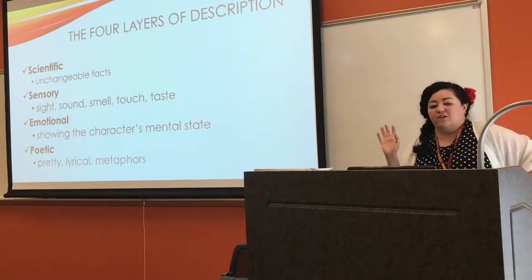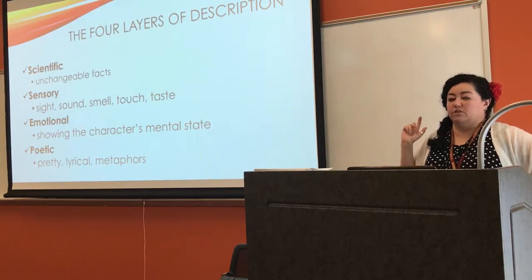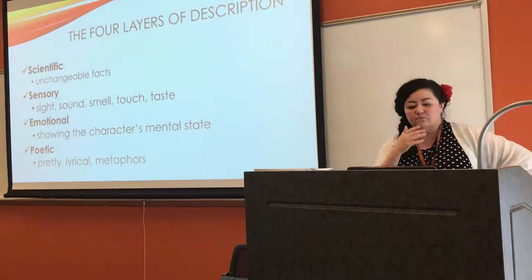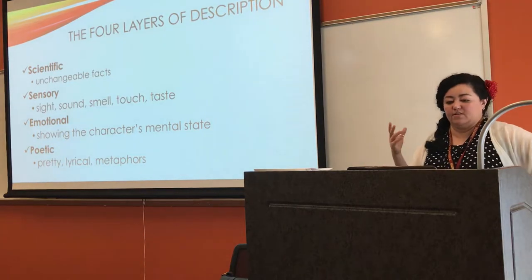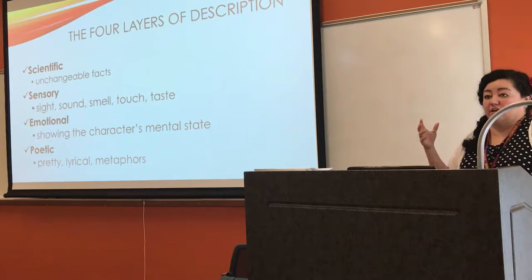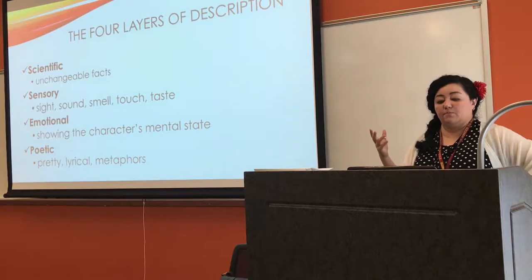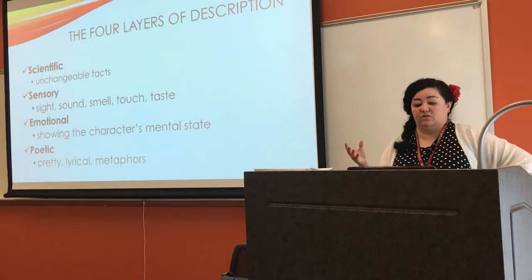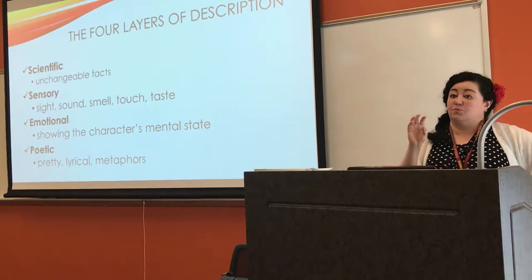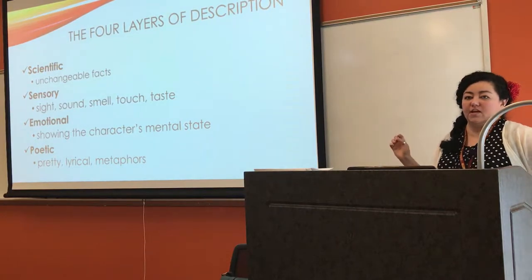There are four layers of description. First, scientific — the facts. The sky is blue, the grass is green, it is 83 degrees outside. Then sensory — sight, sound, smell, touch, taste. Then emotional — the character's mental state as they're experiencing things. And then poetic — the lyrical, the metaphors you get to throw in. You add all of that in, but without getting into purple prose, like four pages describing Edward Cullen's hair.